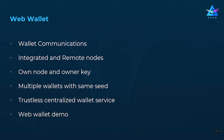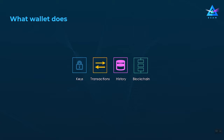Let's start by understanding exactly what functionality the Beam wallet does today. First of all, it manages all the secret keys generated from the seed phrase, which are then used to create transactions, kernel EXOs, and all other operations including SBBS. The other part of the wallet functionality has to do with creating transactions. Since Mimblewimble is an interactive protocol, both wallets have to participate in the creation of a transaction.